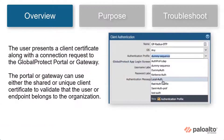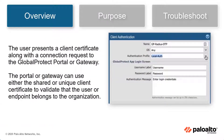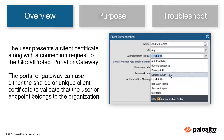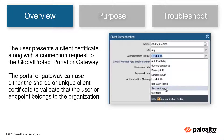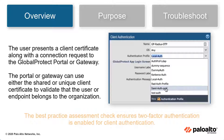With client authentication, the user presents a client certificate along with a connection request to the GlobalProtect portal or gateway. The portal or gateway can use either a shared or unique client certificate to validate that the user or endpoint belongs to the organization.